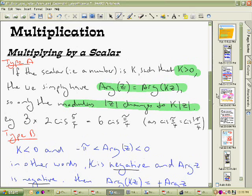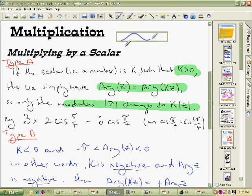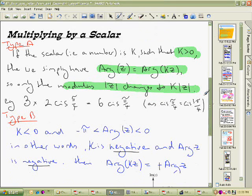Multiplication though for complex numbers in the polar form is different. First of all, multiplying by a scalar - that just means multiplying by a number, multiplying by 2 or 3 or something like that. We have a couple of rules here, it's pretty simple really. I've categorized them into types. The first type, if the number that we're multiplying by happens to be more than 0, that is a positive number, if that's the case, then we simply have this.